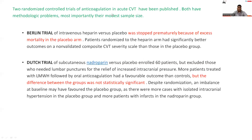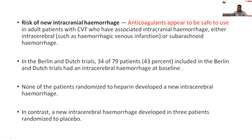There are two randomized controlled trials of anticoagulation in acute CSVT — the Berylene trial and the Dutch trial — both of which have methodological problems, most importantly their modest sample sizes. The Berylene trial was stopped prematurely because of excess mortality in the placebo arm. In the Dutch trial, there was no statistically significant difference between the patient and control groups. Regarding the risk of new intracerebral hemorrhage, anticoagulation appears to be safe in adult patients with CSVT who have associated intracranial hemorrhage. Of 34 patients with intracranial hemorrhage at baseline across both trials, none randomized to heparin developed a new intracerebral hemorrhage, whereas three patients randomized to placebo did.